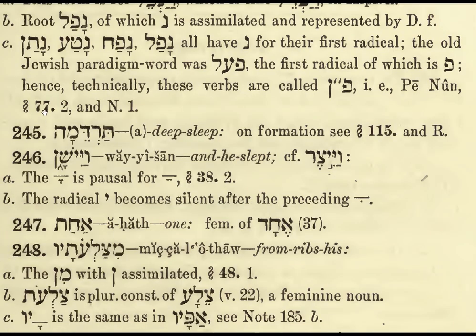Natan, Natang, Nafal — all have Nun for their first radical. The old paradigm word was Pangal, to help remember the Binyanim, the paradigms. The first radical of which is Pe, and so technically these verbs are called Pe-Nun verbs.